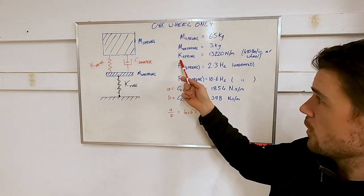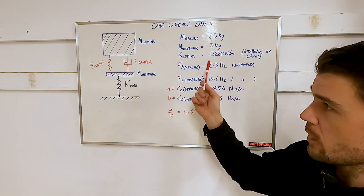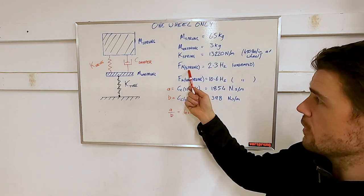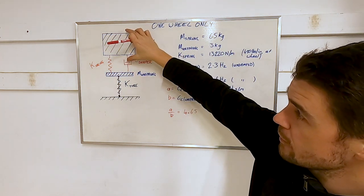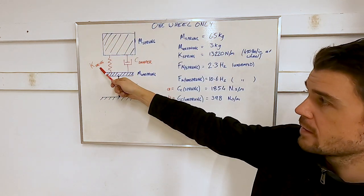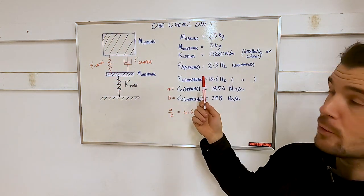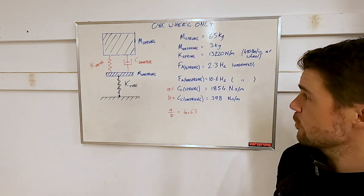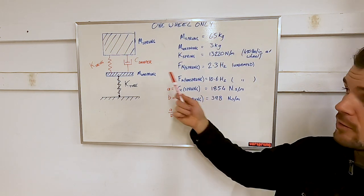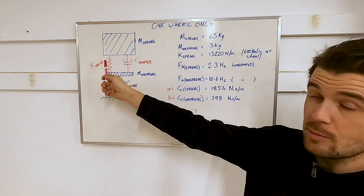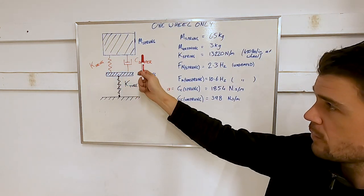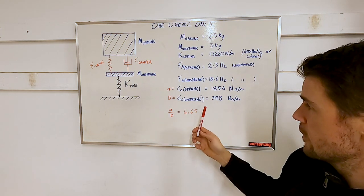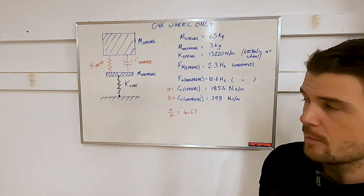Our natural frequency of the sprung mass — fn-sprung — is basically the natural frequency that the sprung mass would tend to resonate at given the spring rate, with no damping. That comes out to 2.3 Hz, give or take. The natural frequency of the unsprung mass, however, is 10.6 Hz, because we're using essentially the same spring rate. You can see that this is significantly higher — in fact, it's 4.65 times higher. If we calculate the critical damping coefficient cc for the sprung mass, we get something like 1,850 N·s/m. For the unsprung mass, we get 398 N·s/m. This ratio is the same — it's basically a ratio of the masses.